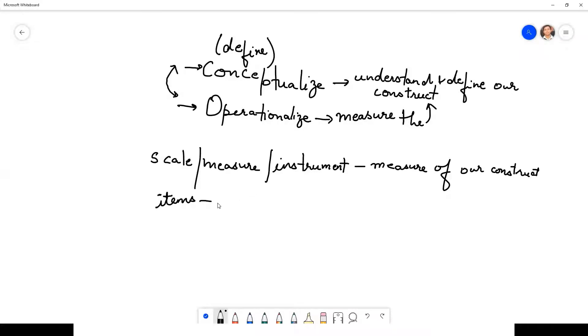In these scales you would have heard of items. Items are nothing but sentences, slash statements, that together make up our measures. So scale, measure, or instrument is nothing but a combination of different items. These scales can consist of multiple items that are going to be used for our measures of concepts that we are measuring.